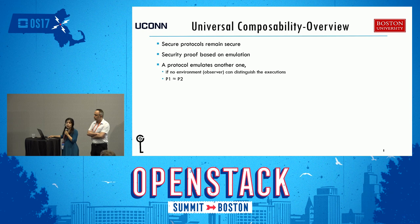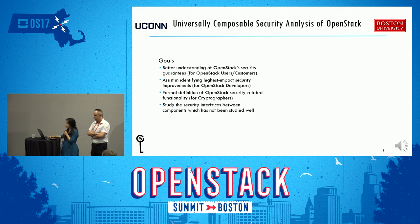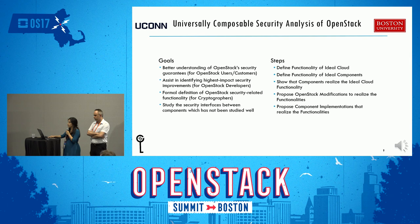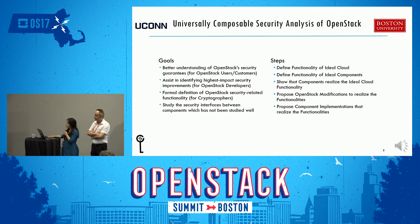For example, if we consider protocol P1 to be secure by definition, we say protocol P2 emulates P1 if the environment is not able to distinguish between its emulation and the execution of the other protocol. In this language, we say P2 is as secure as P1. Our universal composability security analysis of OpenStack has the following goals: better understanding of OpenStack security guarantees, assisting in identifying high-impact security improvements, providing formal definitions of OpenStack security-related functionalities, and studying the security interface between components.